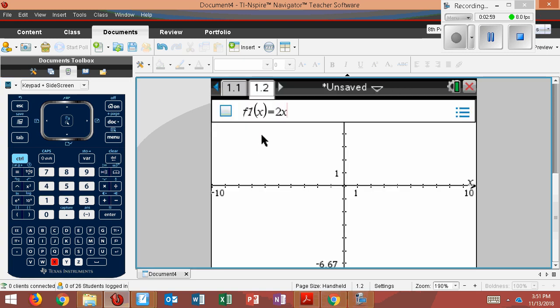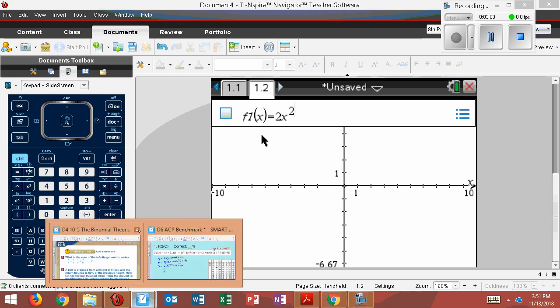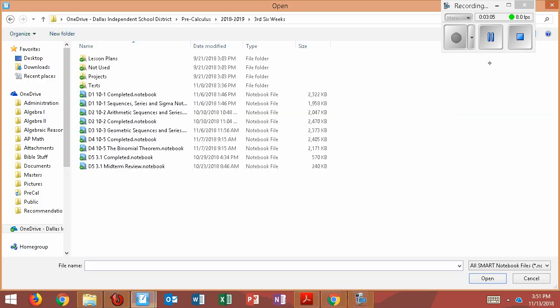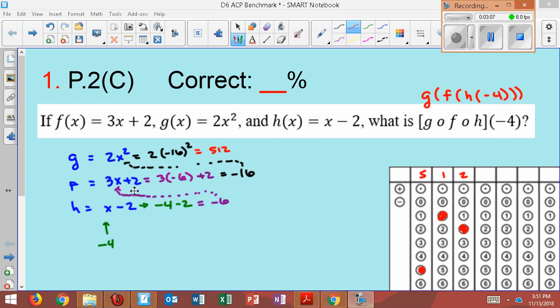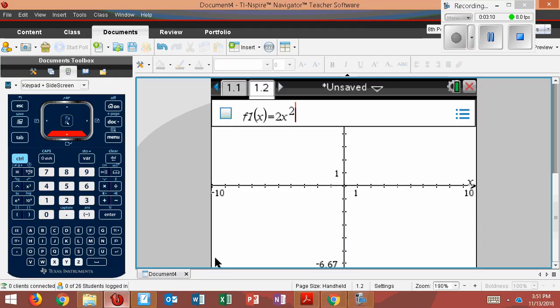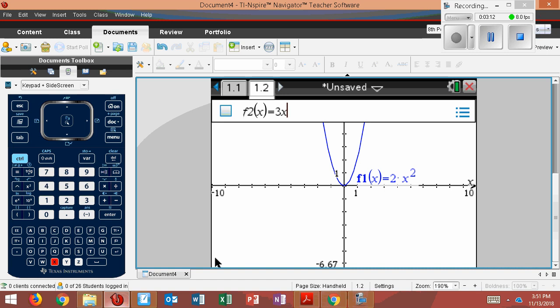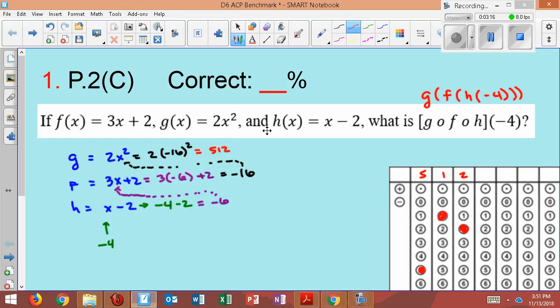Remember how the first equation was 2x squared? So my first equation here is 2x squared. The equation below it was 3x plus 2. So I come over here, and I add 3x plus 2. And then my third equation is h, which is x minus 2.